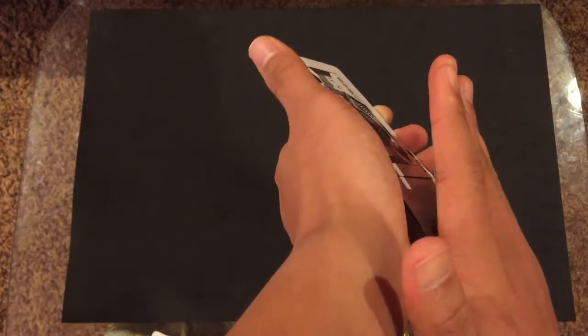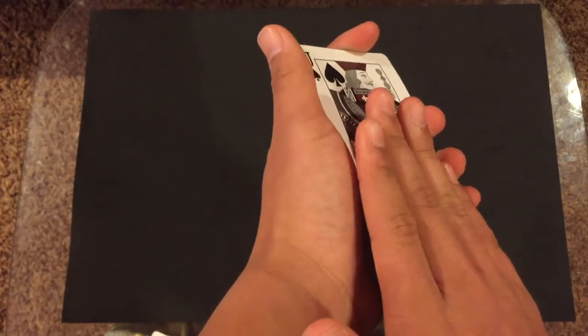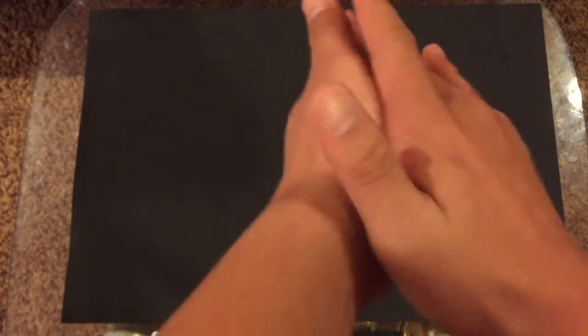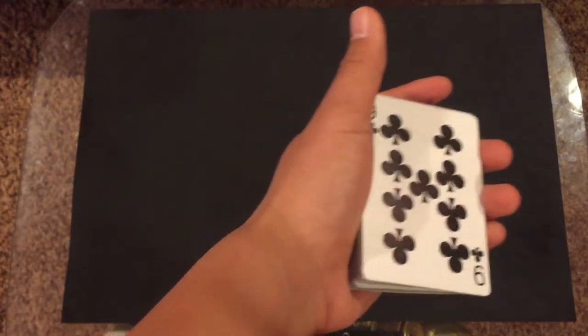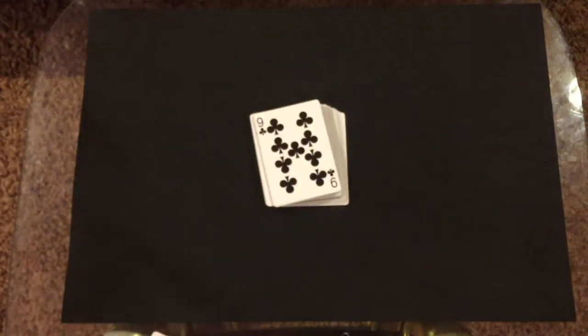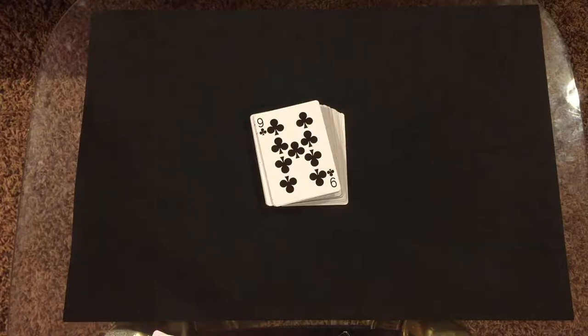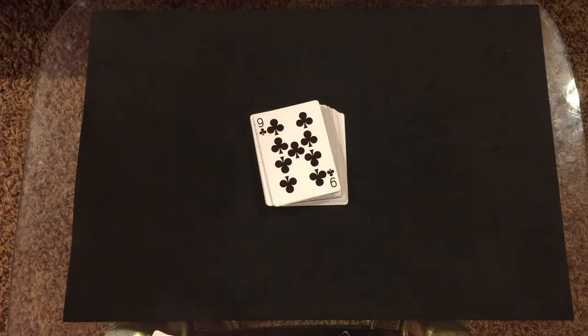So you slide this up and then slide this one out, make sure it's cleared. Push this one in and push both your hands in and rub, and it will change. So that's how you do the Erdnase color change. I'll show it from the bottom perspective.